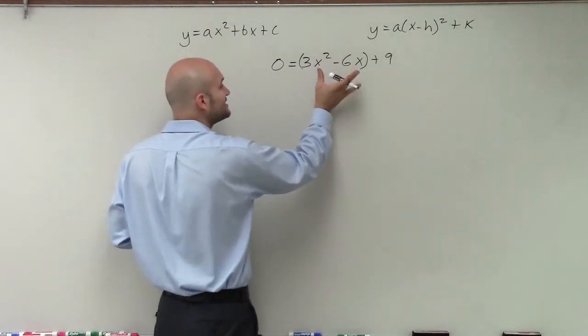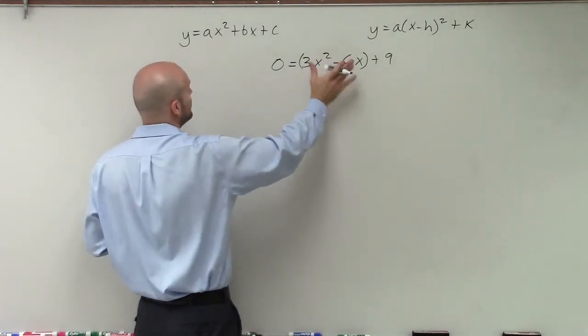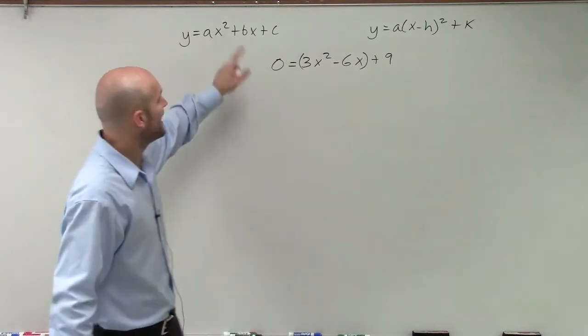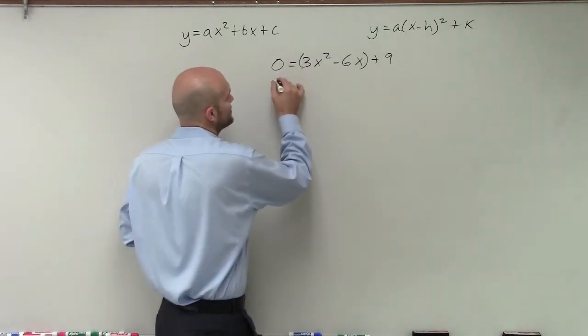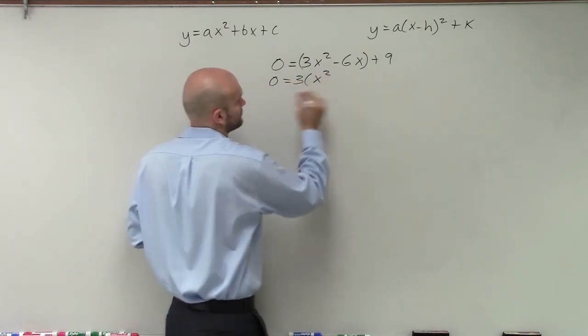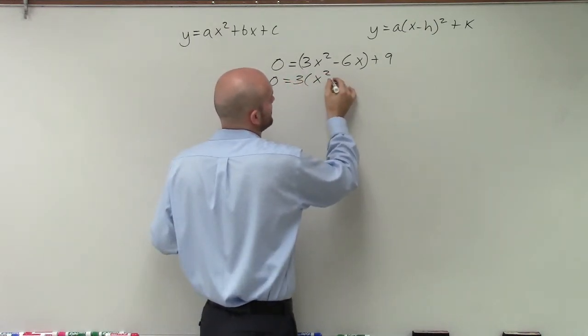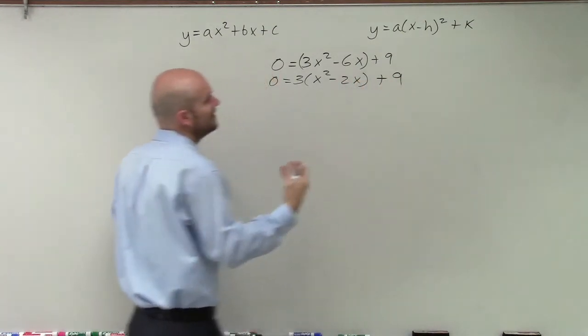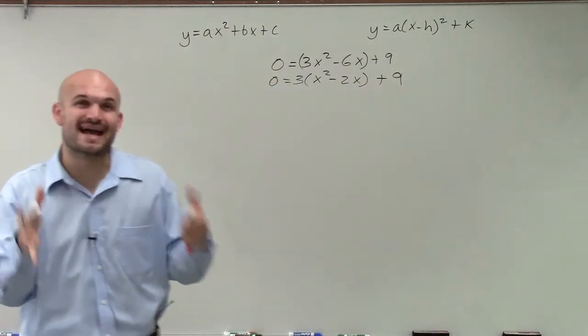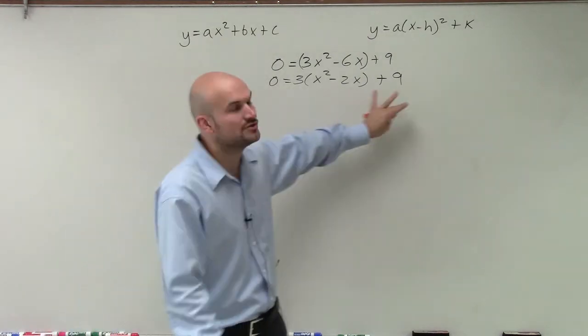So I look in here and I say, all right, I need to make this a perfect square trinomial. Well, to make this a perfect square trinomial, I have to factor out my a. That a has to be 1. So I factor out a positive 3, and that's going to leave me with x squared minus 2x plus 9. Again, I'm only going to factor out those first two because that's what I want to focus on. I'm not really going to be too concerned with the 9.